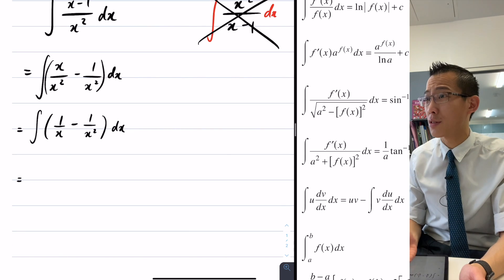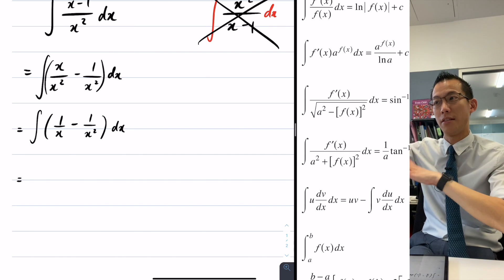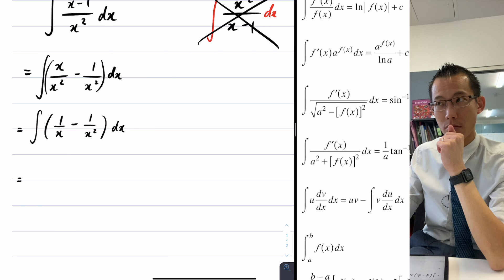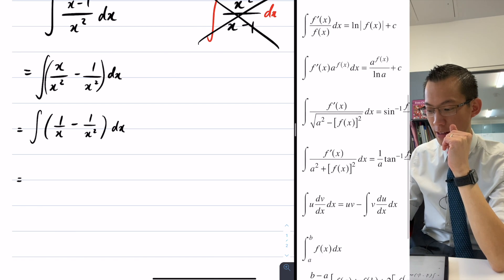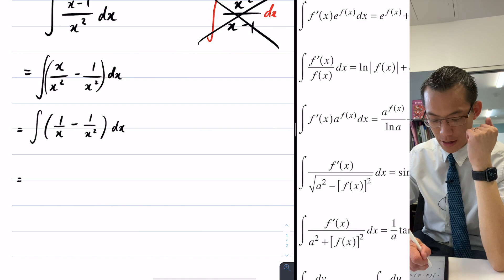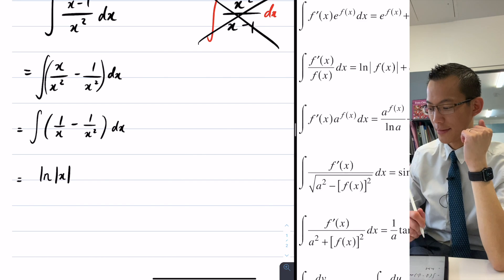So 1 over x, that's like the most simple version of f dash on f that you can think of. So what will the integral of just that part be? The integral of 1 over x. That's going to be, you can even see here, it's just log. Yeah exactly, it's log of the absolute value of x.